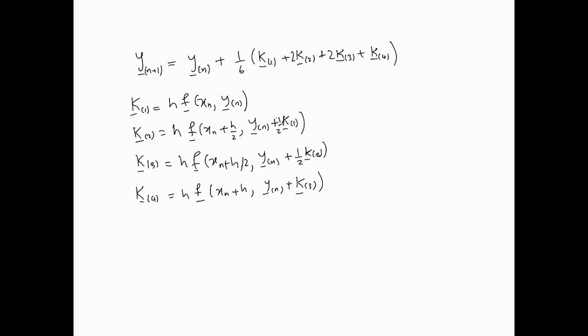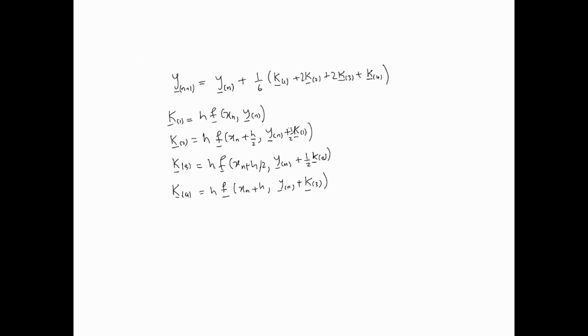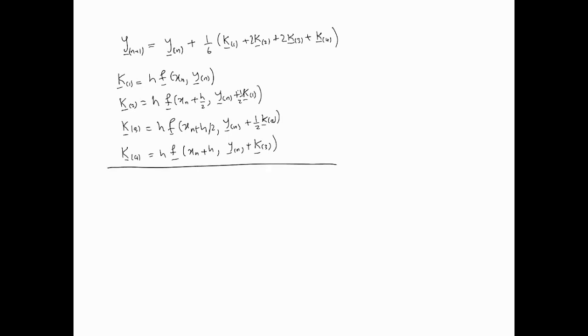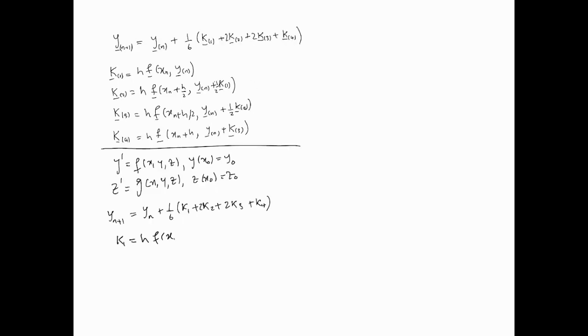As we move further, what would happen is, our k1 in this case is going to be h f(x_n, y_n, z_n), and l1 is going to be h g(x_n, y_n, z_n).